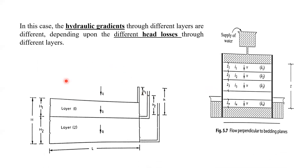So unless this layer is not fully saturated and water does not come to this layer, it will not come to the second layer. Once it is fully saturated, then it will come to the third layer. So the discharge in the second layer depends upon the first layer, and in the third layer it depends upon the second layer. In this case, hydraulic gradients through different layers are different depending upon the different head losses — unlike the previous case where head loss was constant.